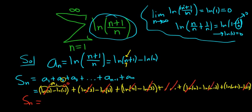all of this goes away. So we're left with just this piece here, ln n plus 1. And this approaches infinity as n approaches infinity. So that means that this series diverges.